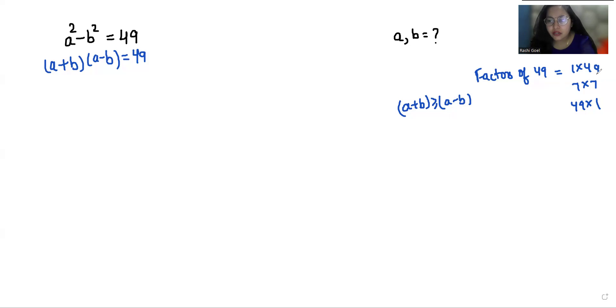Now if I check the first factor pair, 1 and 49, here 1 is less than 49, so we'll reject this case.